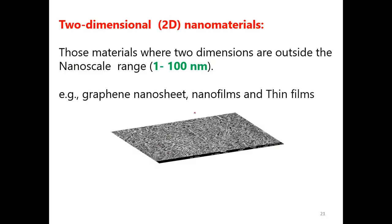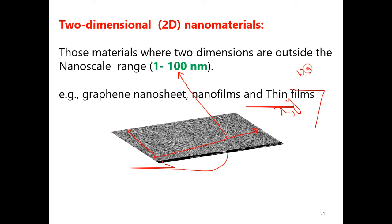Now let us move to two-dimensional nanomaterials. Two-dimensional means that two dimensions are out of the bound of the nanoscale — the x-axis and y-axis like a plane. But the z-axis, which is the thickness, is well below 100 nanometers. The x and y dimensions are greater than 100 nanometers, while the z-axis is less than 100 nanometers. So two-dimensional materials are those whose two dimensions are out of the bound of the nanoscale and only one dimension is well below the nanoscale, like a graphene nanosheet.